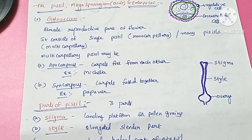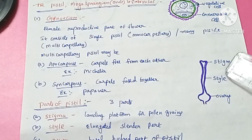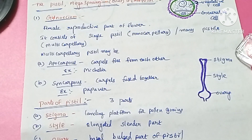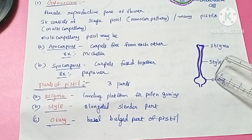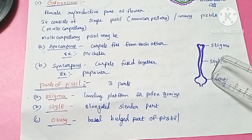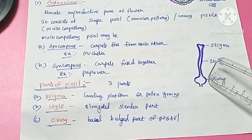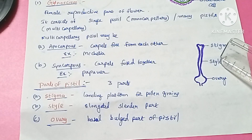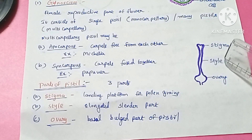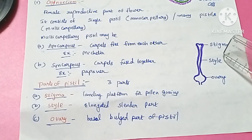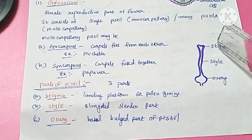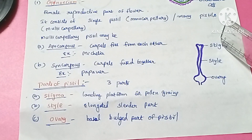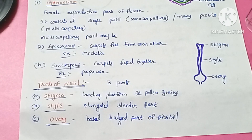The parts of the pistil — there are three parts: ovary, style, and stigma. The ovary is the basal bulged part of the pistil; it consists of megasporangia or female gametes. The style is the elongated slender part present in the middle. The stigma is the opening of the pistil and serves as the landing platform for pollen grains after pollination.